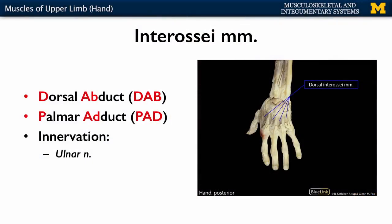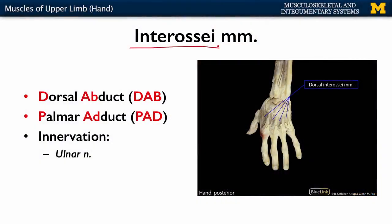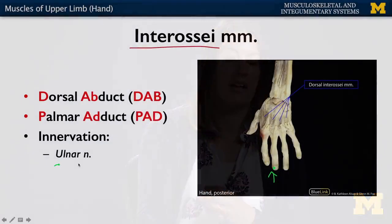Deep to the lumbrical muscles, the deepest muscles of the hand are your interossei muscles — and that makes sense, as they're located between the bones. Your dorsal interossei muscles allow you to abduct your digits two through five, not including one. Your palmar interossei, which we don't have a visual of here, allow for adduction. When talking about the reference axis for abduction and adduction, it is your third digit — you're moving away from or back toward the third digit. Similar to most muscles of the hand, these are innervated by the ulnar nerve.